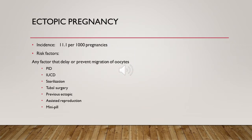Ectopic pregnancy incidence is 11.1 per thousand pregnancies, but it actually represents 3 to 5 percent of patients presenting to the early pregnancy unit. The difference is these patients who present to the early pregnancy unit are referred from their GP or coming because of a complaint — most likely pain or bleeding — which are symptoms of ectopic pregnancy.